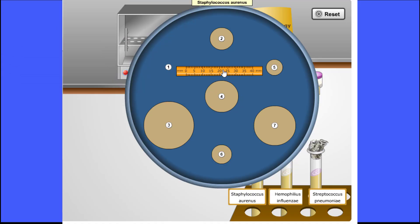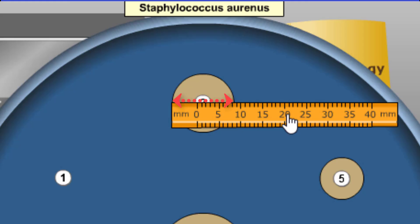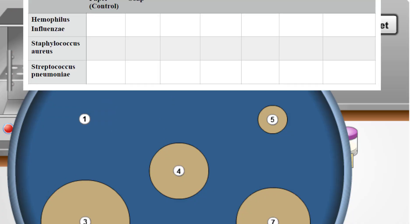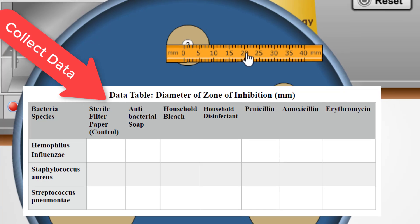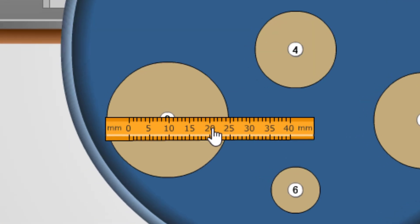For number 2, in order to measure the zone of inhibition, we will want to take the measurement that is the diameter of the circle of the zone of inhibition. Be sure to write down and record in your laboratory table the zone of inhibition for each type of bacteria and disinfectant or antimicrobial agent.